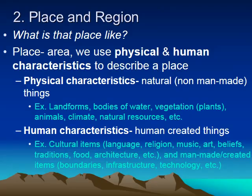The second element of geography is place and region, which answers the question: what is a place like? We use two ways to describe a place — physical and human characteristics. Physical characteristics are natural or non-man-made. They're things that humans did not create, like landforms, bodies of water, vegetation, animals, climate, and natural resources.